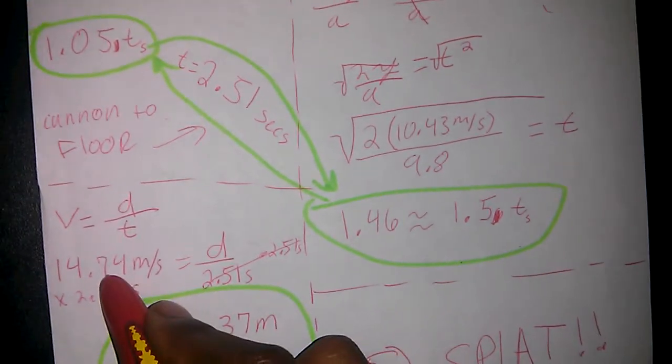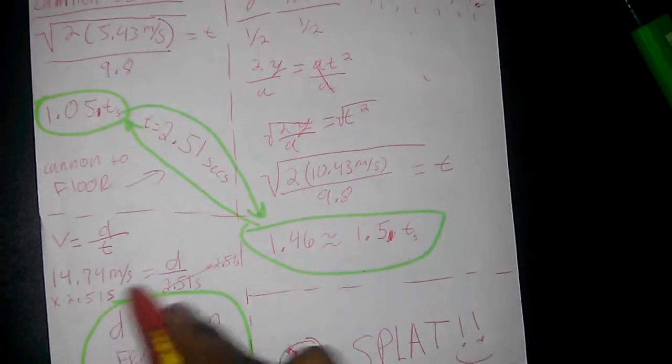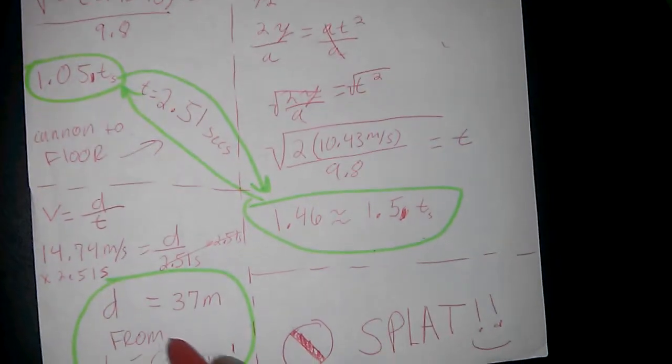So you go ahead and you solve, divide. And you got your velocity because you went ahead and added things together right here. Went ahead and divided. Went ahead and multiplied.